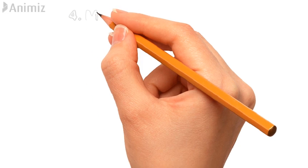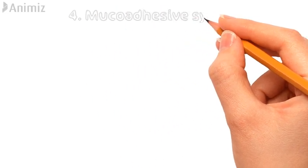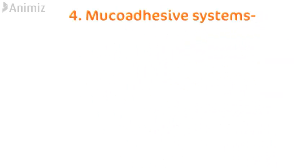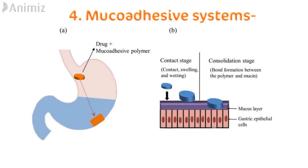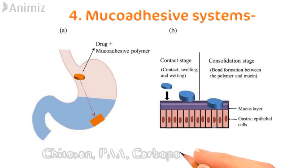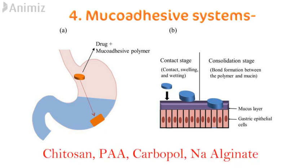The fourth system is mucoadhesive systems. In this system, the drug is mixed with mucoadhesive polymers like chitosan, polyacrylic acid, carbopol, and HPMC. These systems get adhered to the wall of the stomach.